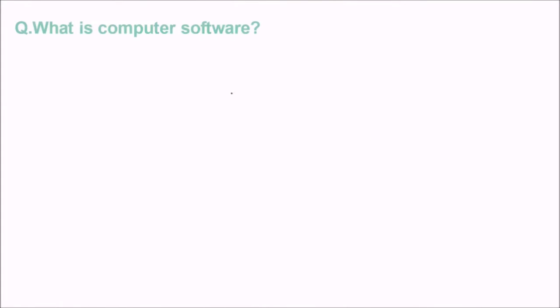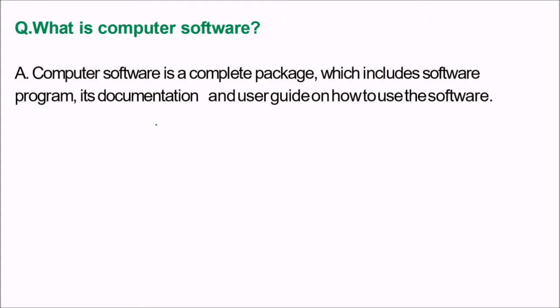The first question is: what is computer software? What do you mean by software? Computer software is a complete package which includes the software program, its documentation, user guide, and how to use the software.